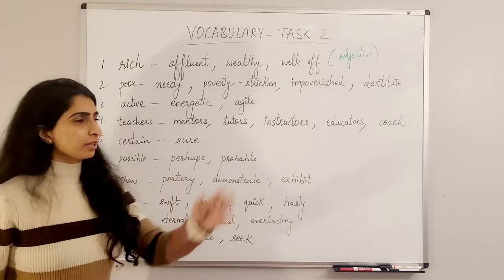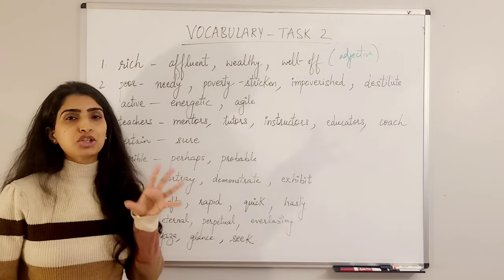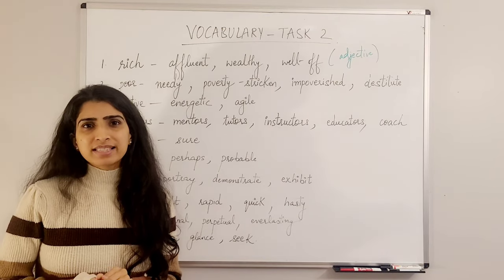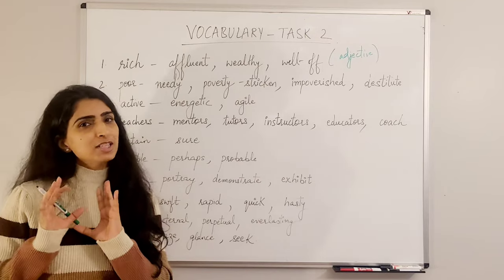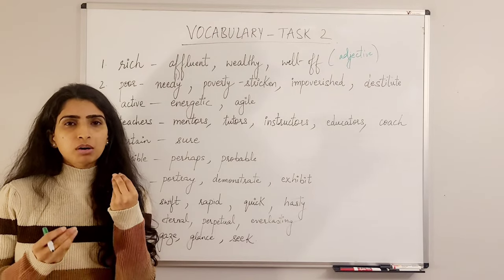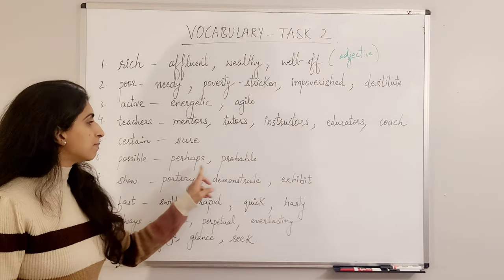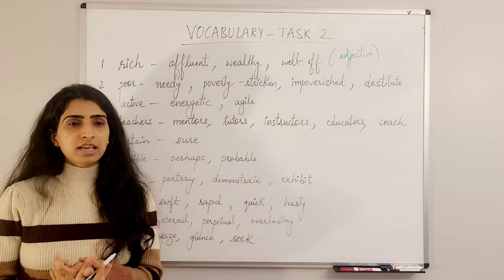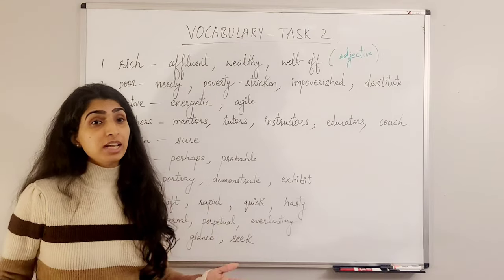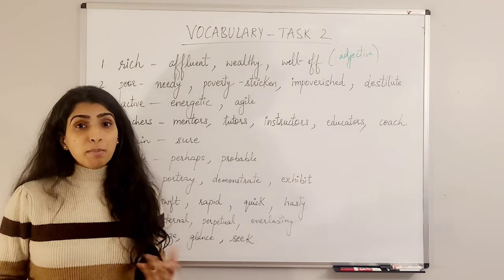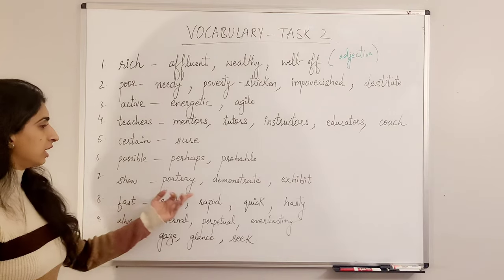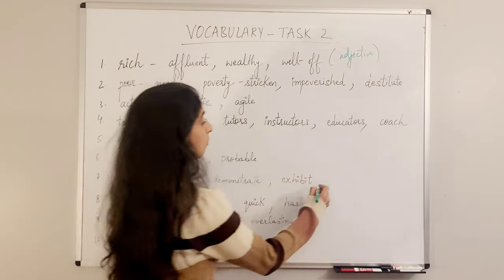'Certain' means sure or definite — for example: I am certain that I will pass the exam. Synonyms: sure, confident. 'Possible' implies a 50/50 chance — synonyms: perhaps, probable. For example: it is possible that it might rain today, or there is a probability that it might rain today.